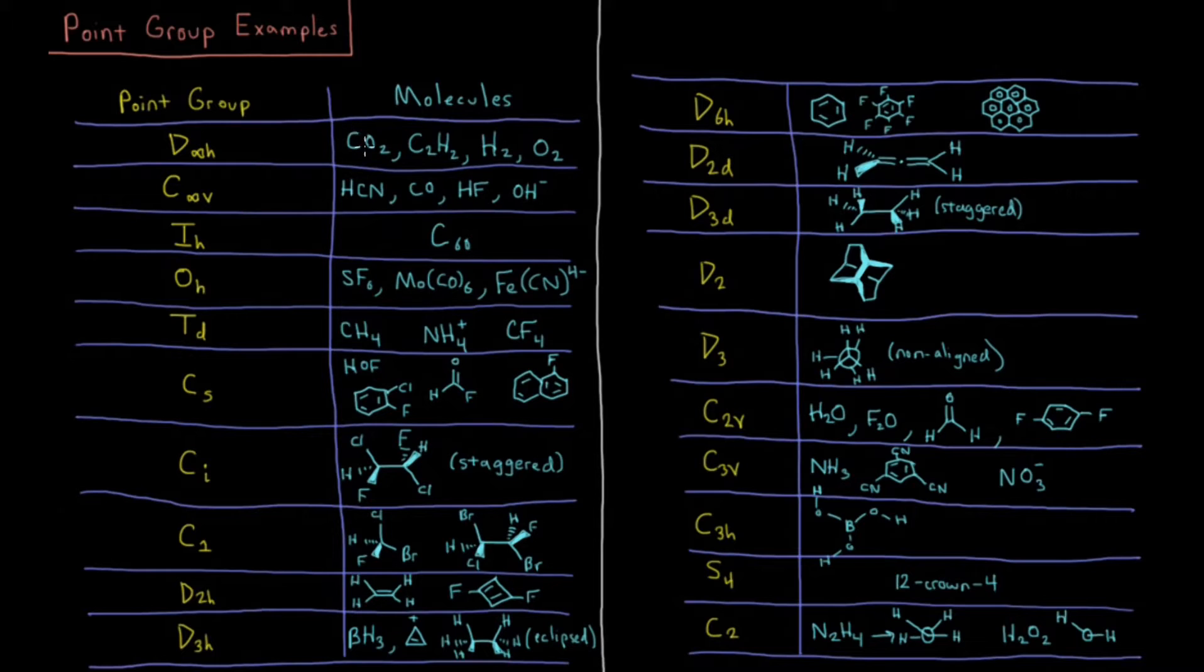Then if I break that symmetry about the middle of that axis, it's things like heteronuclear diatomics or linear polyatomics. Then I have things like C infinity V for HCN, CO, HF, hydroxide ion, etc.